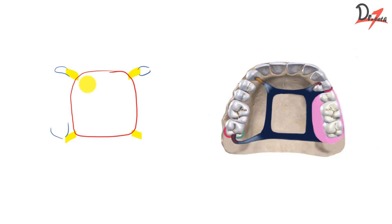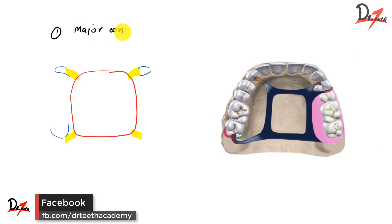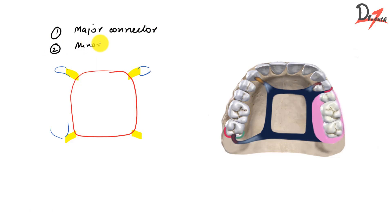So the minor connectors connect the major connector to the other units of the prosthesis, such as clasp assembly, indirect retainer, occlusal rest, or cingulum rest. So till now we have seen two components. The first one is the major connector and the second one is the minor connector.